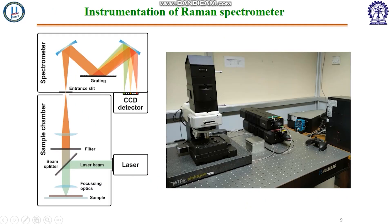Here you can see the digital image of the Raman microscopy system installed in our lab. This system consists of three main components: the microscope column, which includes a motorized stage, objectives, filters, light source, and video camera; the lasers, which act as the monochromatic light source; and a spectrometer for detection of the Raman signal, which consists of gratings and a charge-coupled device detector.